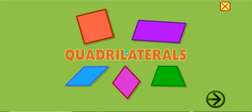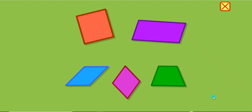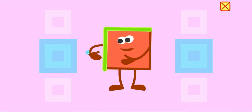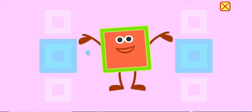Quadrilaterals have four straight sides. One, two, three, four.